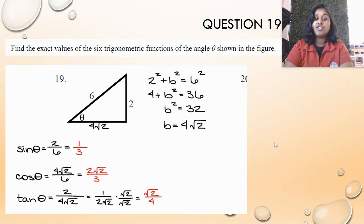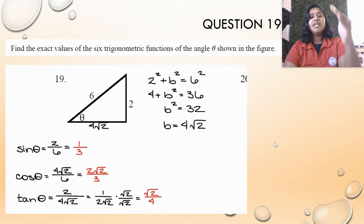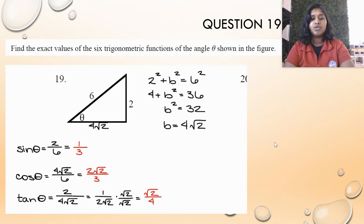Tangent is opposite over adjacent, so 2 over 4√2 simplifies to 1 over 2√2. If we rationalize it, we end up with √2 over 4. That's it. You literally just take your parts, put them in the fraction, simplify if you need to.